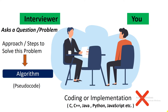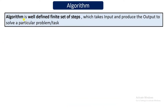So what does algorithm mean? Basically, an algorithm is a collection of a very well-defined, finite number of steps. This can actually take the input and it can produce the output to solve a particular problem. And the problem can be any computational problem — which is actually computing something.